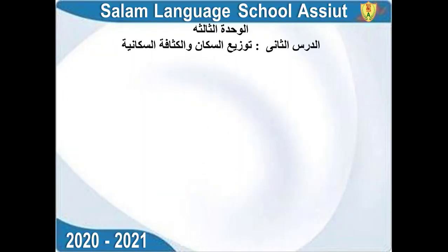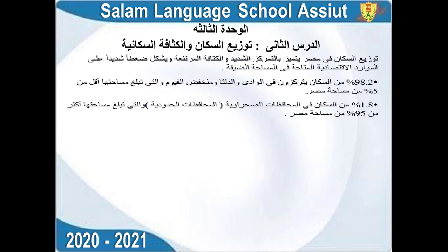Today we will talk about the second lesson. We will find that 98.2% of the population in Egypt, which is about 5% of the population in Egypt. For reference, we will find that number from North Carolina, which relates to the first lesson, with America accounting for 2.5% of countries.